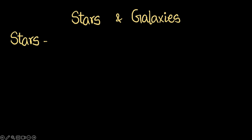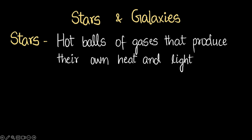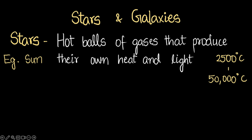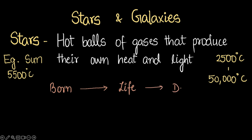Stars are hot balls of burning gases that produce their own heat and light. The most common example of a star is the Sun. The surface of stars is extremely hot — temperatures range from 2,500 degrees Celsius to about 50,000 degrees Celsius. Even the Sun is extremely hot at 5,500 degrees Celsius on its surface. Stars are born at a particular point, they have their life, and in the end they experience death, just like us humans.